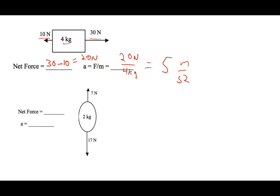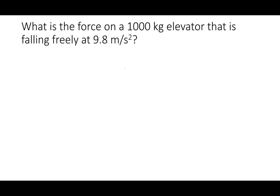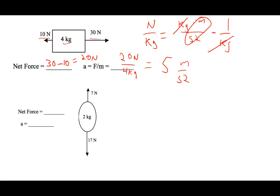Let me show you how the units work out. When I divide Newtons by kilograms, Newtons is the same as kilograms times meters per second squared. Dividing that by kilograms — multiplying by 1 over kilogram — the kilograms cancel, leaving meters per second squared, which makes sense because I'm looking for an acceleration.